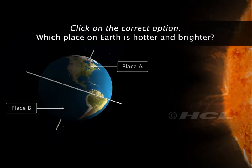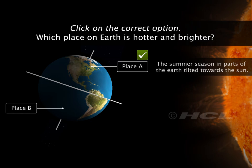Now, which place on earth is hotter and brighter? Place A which is tilted towards the sun, or place B which is tilted away from the sun? Places on earth which are tilted towards the sun get sunlight coming straight. This light is brighter and hotter. These areas experience the summer. Places tilted away from the sun get slanting light from the sun. This light is less bright and has less heat. These areas endure the winter season.